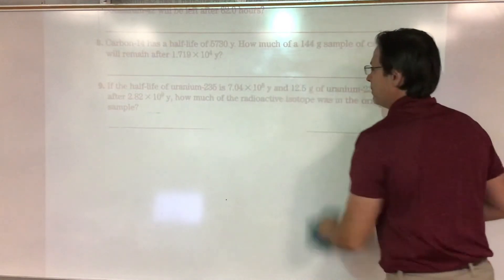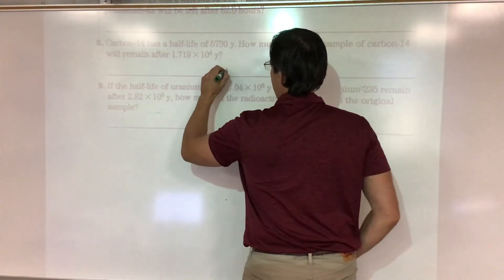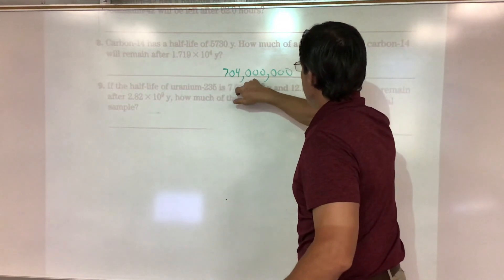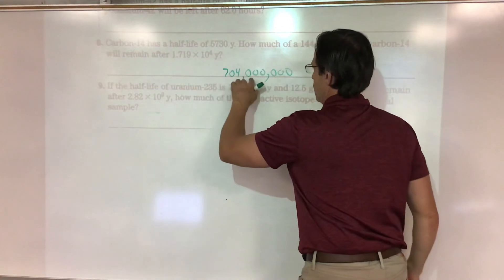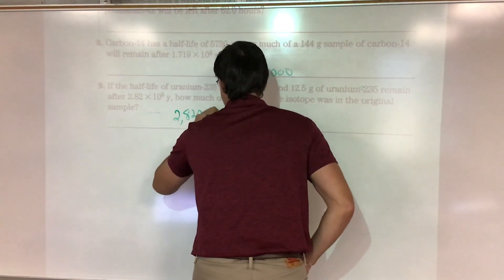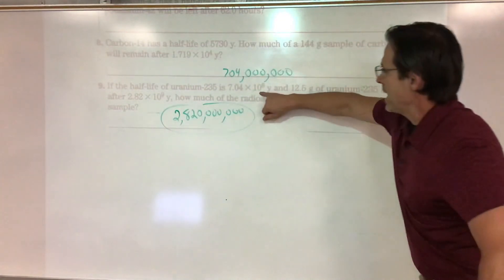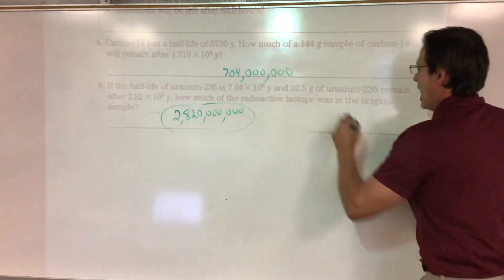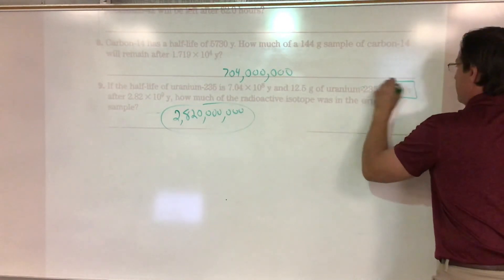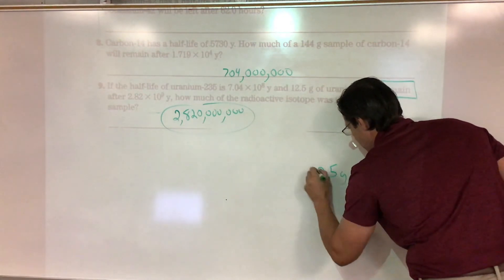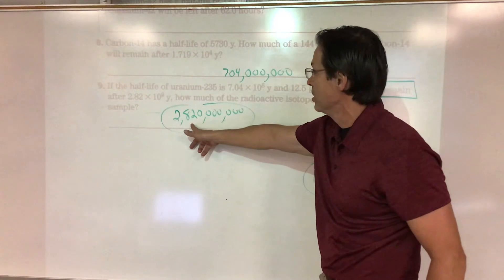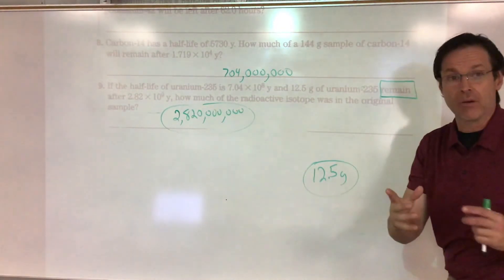Number nine also uses scientific notation. Write it out: 7.04 × 10⁸ is 704,000,000 and 2.820 × 10¹² is 2,820,000,000,000. This is the half-life and the total time. The tricky part: 12.5 grams remain — that's what's left after the breakdown, and we need to find the original sample size.